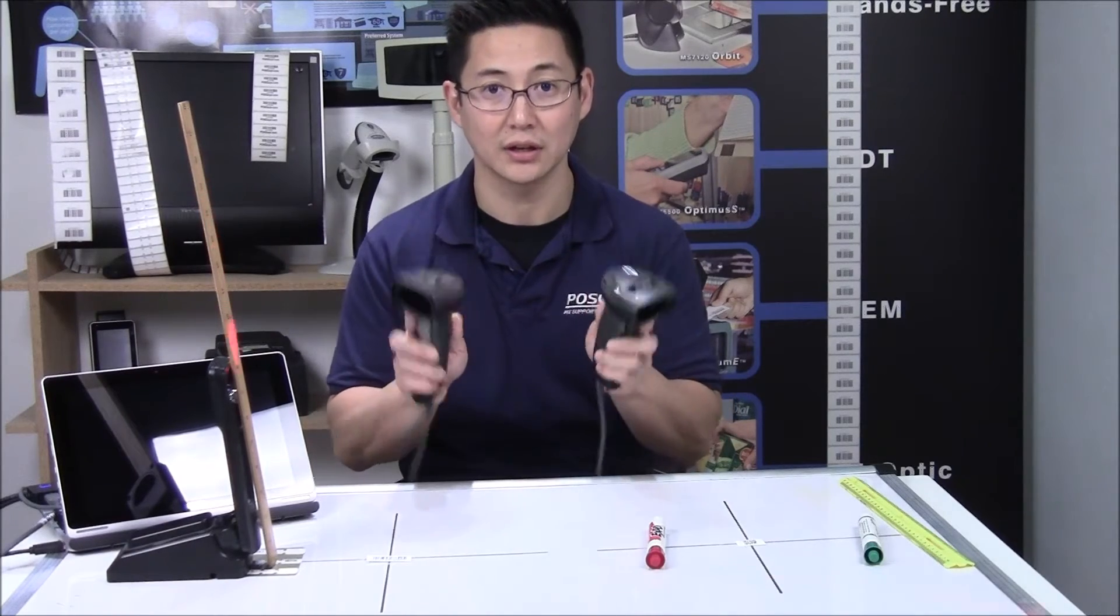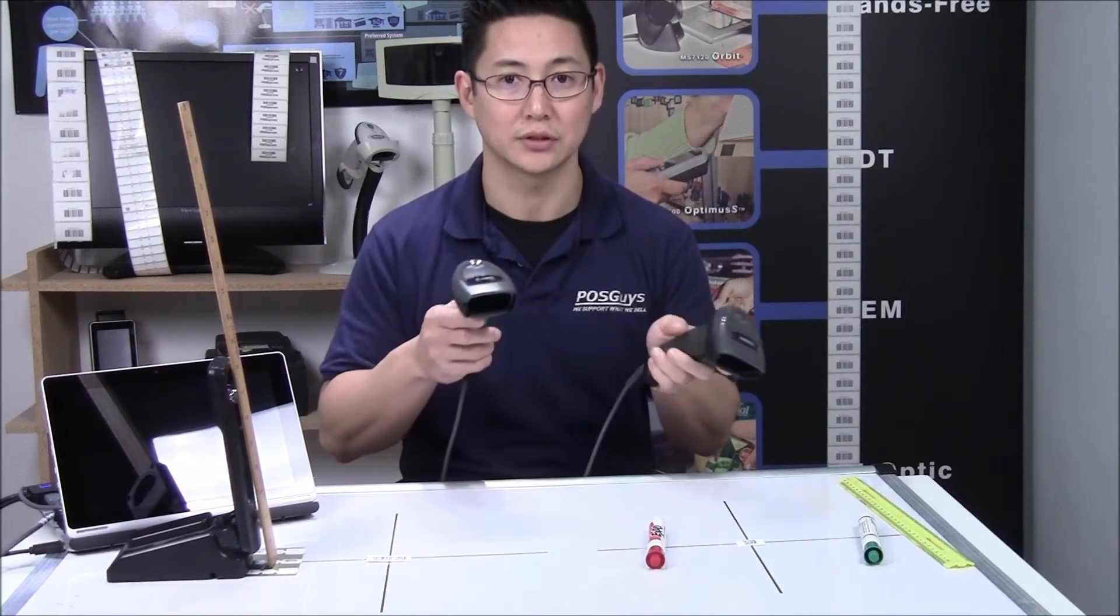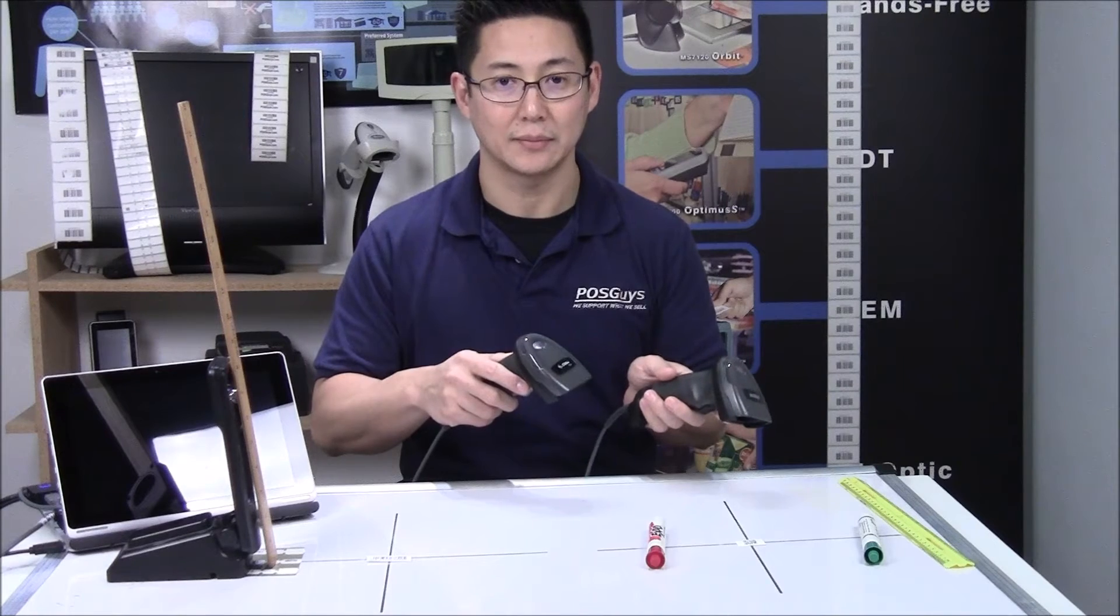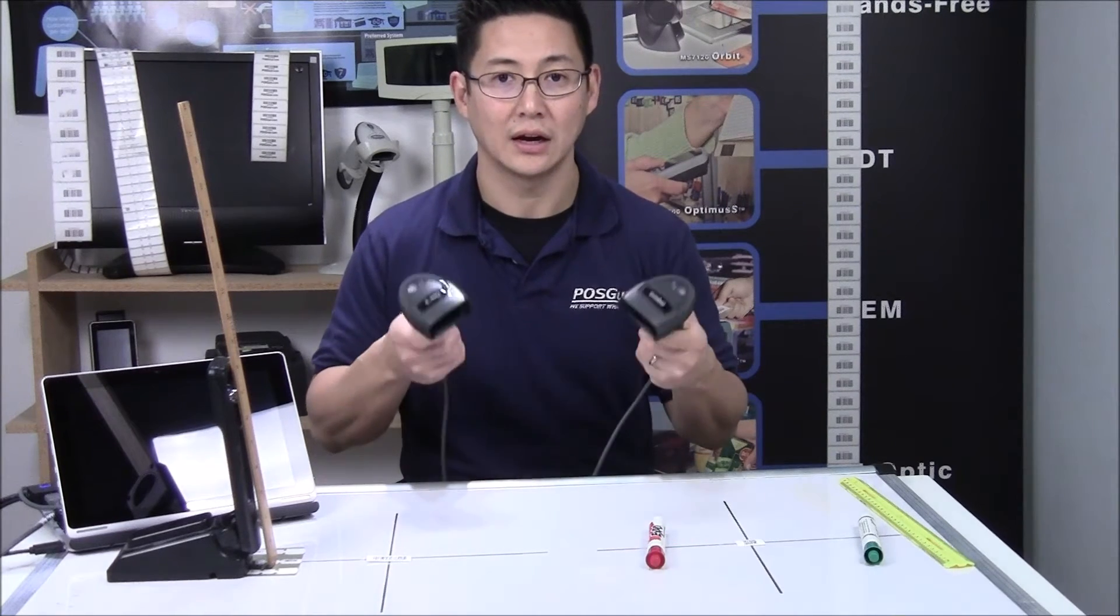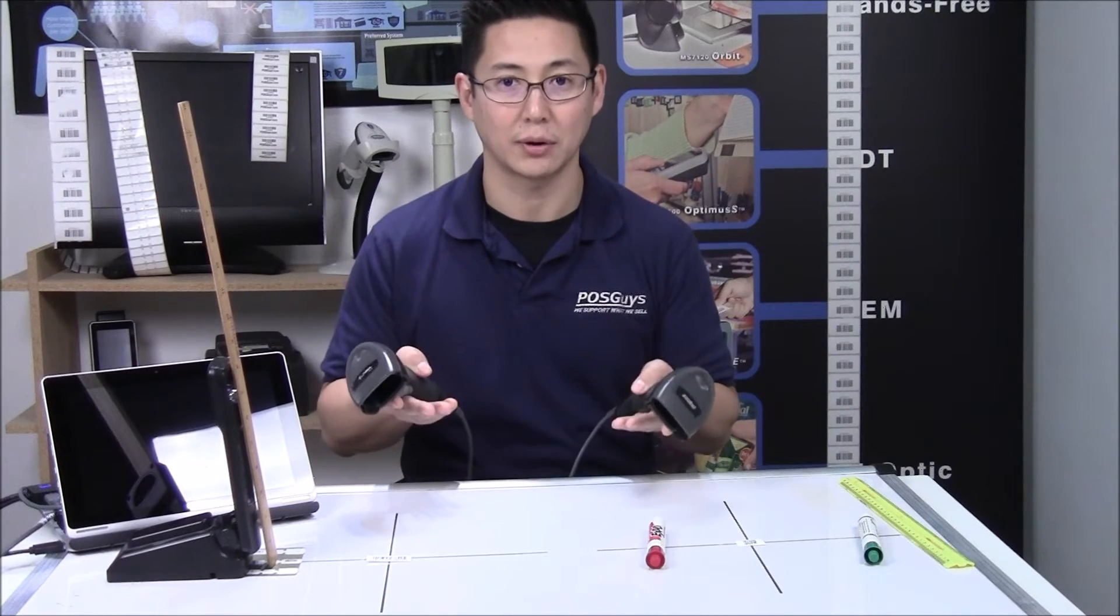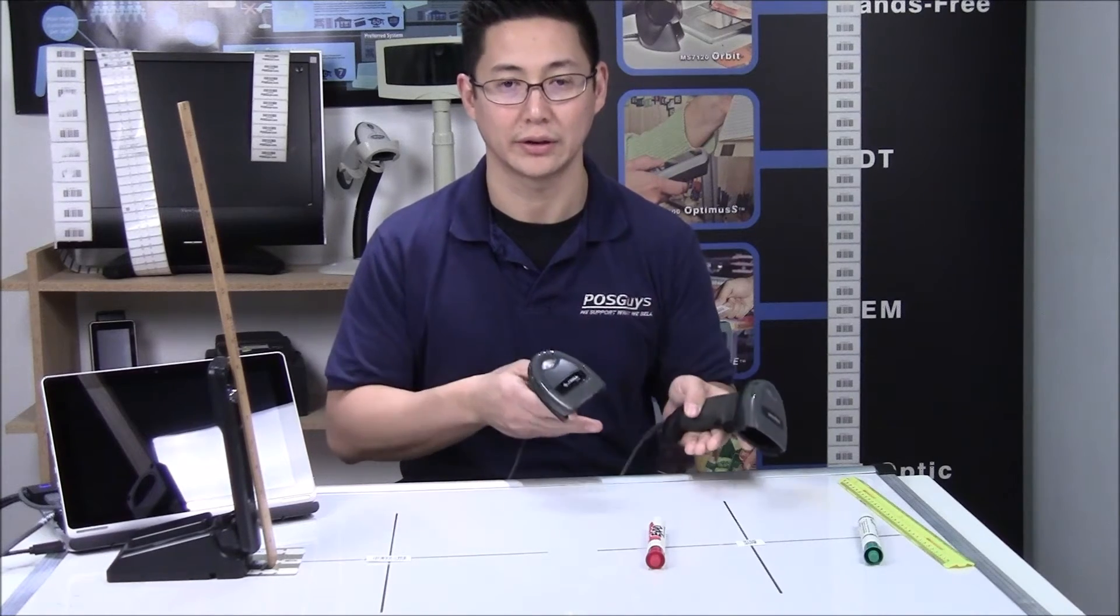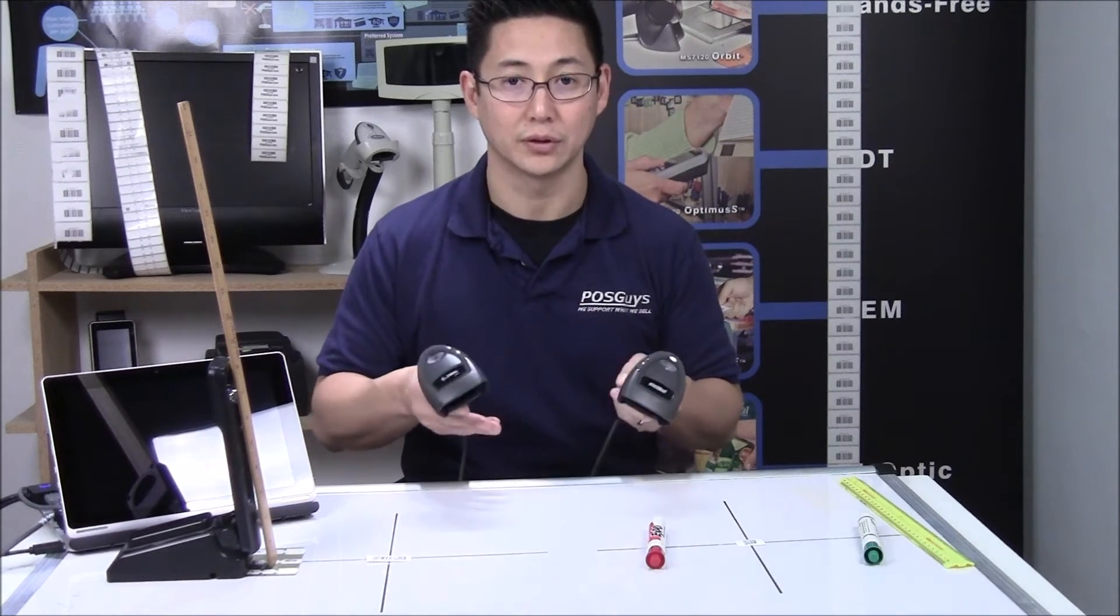They look very similar. They both scan phones. They both scan out of a stand automatically in auto sensing mode. They both work with a trigger. They can read 2D barcodes, 1D barcodes. They work great for retail. They work great for light industrial. They're all great scanners.